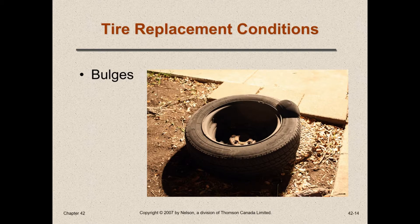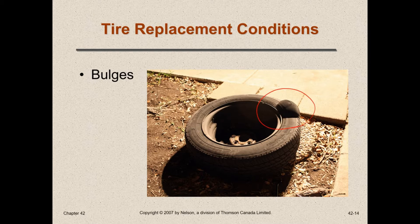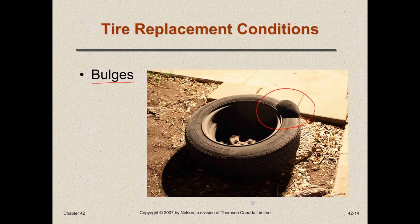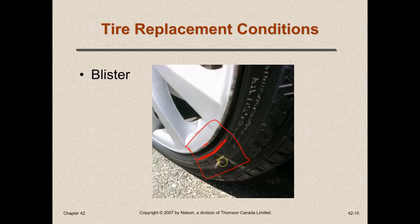There are several tire replacement conditions to watch for. A bulge is fairly obvious — air has gone past the belt to the outer liner and it balloons out. If you encounter this, carefully remove the air through the valve because if it blows up it really packs a wallop. A blister typically happens when you're driving around a corner on ice, slide, and hit the curb — it damages the rim, the bead, and the inner lining of the tire, and could turn into a bulge.